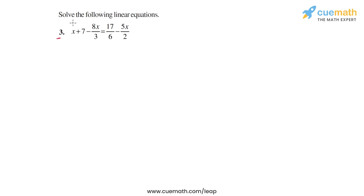In question 3 we have to solve this equation which has x plus 7 minus 8x by 3 on the left hand side and on the right hand side we have 17 by 6 minus 5x by 2.